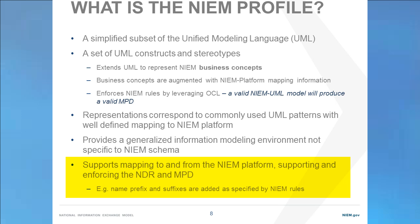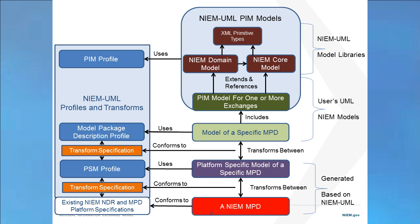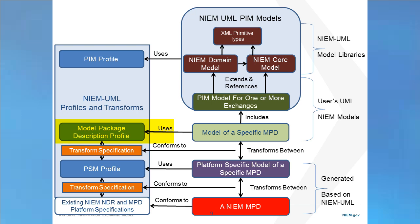All mappings from the Niem models to the Niem platform support and enforce the naming and design rules and the model packaging specifications. For example, names a business user may use in a model are automatically modified to comply with the NDR rules. Reviewing the parts of the specification in more detail, we have the PIM profile, or Platform Independent Model Profile. This is used for both the Niem reference models and for models that users create for their own purposes. The Niem reference models use the PIM profile, as does Niem Core and the XML primitive types. These are extended, referenced, and reused within a PIM model for a specific domain, application, or IEPD. The Model Package Description profile is then used for a specific model of an MPD or IEPD.